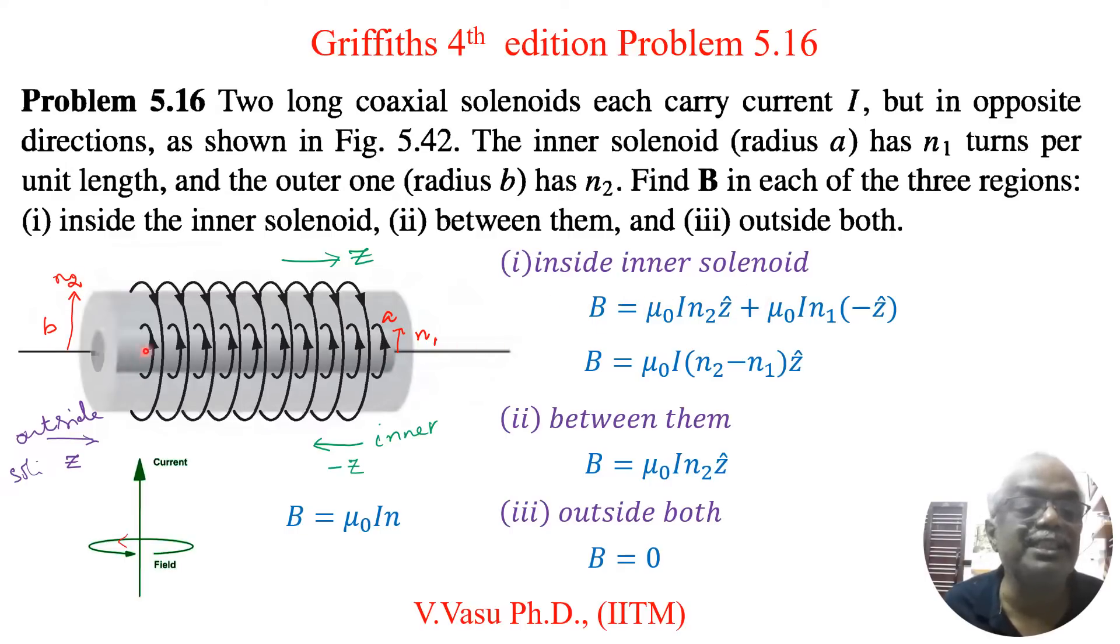That is inside inner solenoid there is a contribution between both the solenoids. Due to the outer solenoid it is mu naught from this formula. That is magnetic field due to solenoid is equal to mu naught I n.